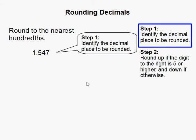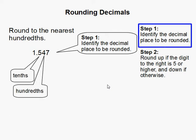Step 1. Identify the decimal place to be rounded. We have the tenths, the hundredths, and the thousandths.